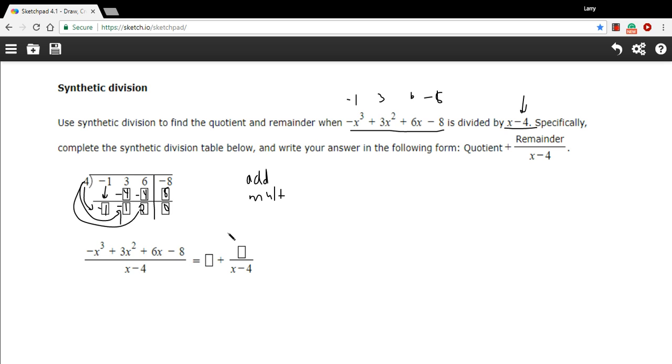Now, what we ended up with is negative 1, negative 1, 2. We have to translate this. Just as this was a coefficient, the set of the coefficients, this is the set of coefficients for our answer.